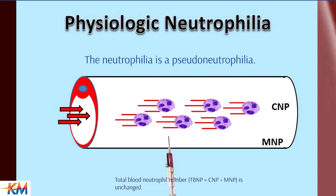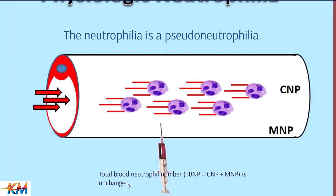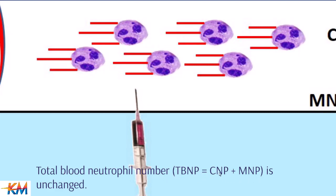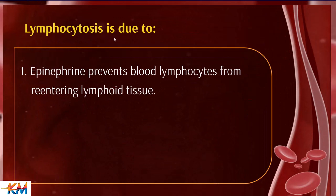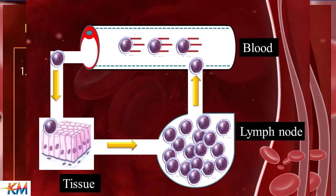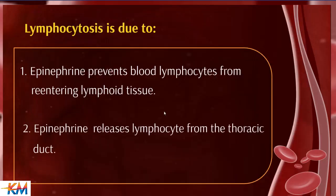The increase in neutrophil count is due to addition of marginal to central neutrophilic pool — the pool used during CBC counting. The increase is not true neutrophilia, as there is no increase in bone marrow production; it is only redistribution, with no increase in the total neutrophilic pool. Lymphocytosis in physiologic neutrophilia occurs because epinephrine prevents blood lymphocytes from re-entering lymphoid tissues and increases release of lymphocytes from the thoracic duct.